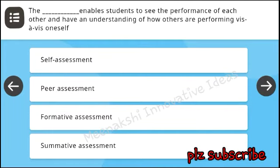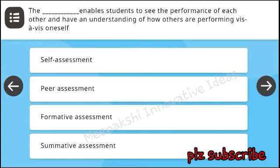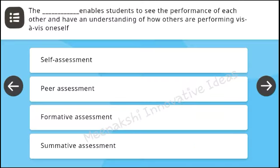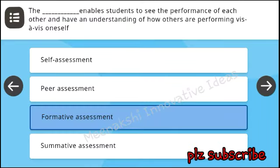The blank enables students to see the performance of each other and have an understanding of how others are performing vis-a-vis oneself. Options: self-assessment, peer assessment, formative assessment, summative assessment. Answer: peer assessment.